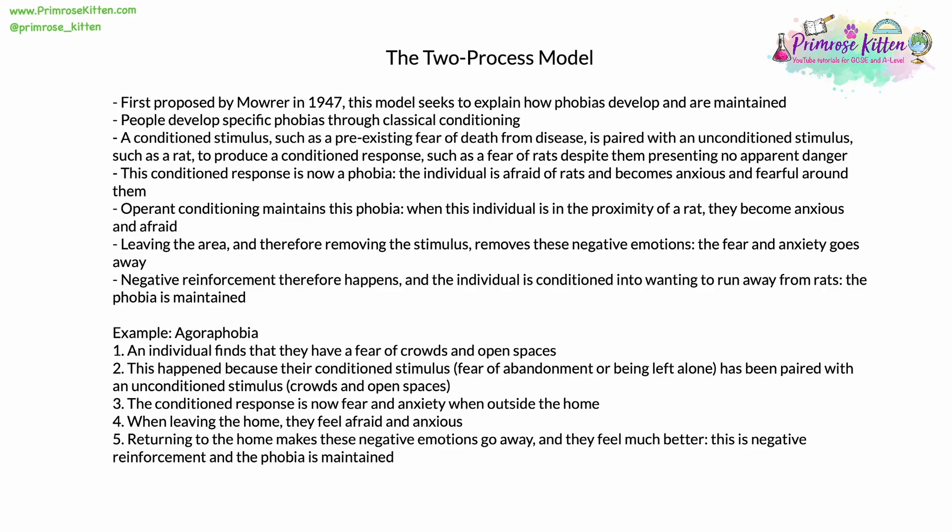Developing on this, the two process model was first proposed by Maurer in 1947. This two process model seeks to explain how phobias develop, but also how they're maintained and continue. People develop specific phobias through classical conditioning. A conditioned stimulus, such as a pre-existing fear of death from disease — which is entirely rational and normal — is paired with an unconditioned stimulus, such as a rat, something which isn't evolutionarily locked in and isn't rational.